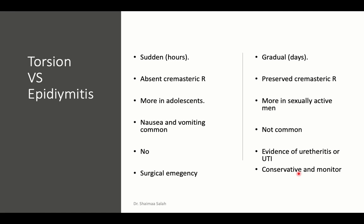Causes of acute scrotal pain include testicular torsion, torsion of appendix of epididymis, epididymitis, trauma, and hernia. If torsion: surgical emergency requiring urgent exploration and correction. Epididymitis: medical condition treated conservatively. Torsion develops suddenly within hours with acute scrotal pain, nausea and vomiting, and absent cremasteric reflex — more common in adolescents. Epididymitis develops gradually over days, cremasteric reflex is preserved, evidence of urethritis or UTI may be present in urine, more common in sexually active males. Urgent ultrasound with Doppler excludes torsion requiring surgical intervention.